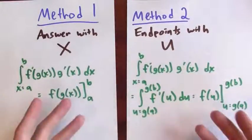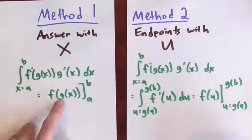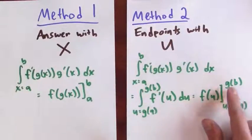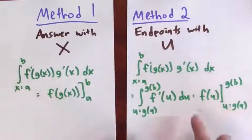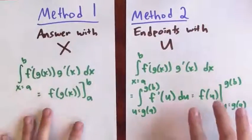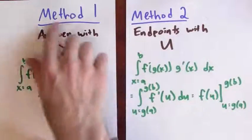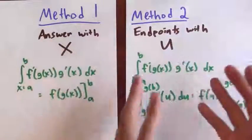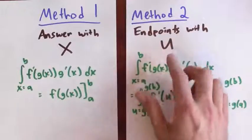At the end of it, I'm doing the same calculation. In both cases, I'm calculating f of g of b, and I'm subtracting f of g of a. But I'm setting it up slightly differently. In the first case, I'm finding the antiderivative in terms of x. And in the second case, I'm changing the bounds on the integral to be in terms of u.